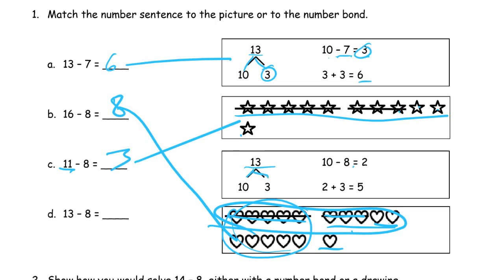And 13 minus 8. 13 is a 10 and a 3. If I subtract the 8 from the 10, I'll have 2 left. And then I add whatever's left to that 10. There's only 2 left there. Add it to the 3. 5 is all that's left.